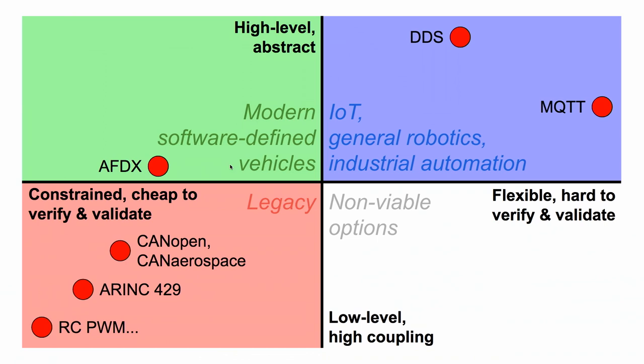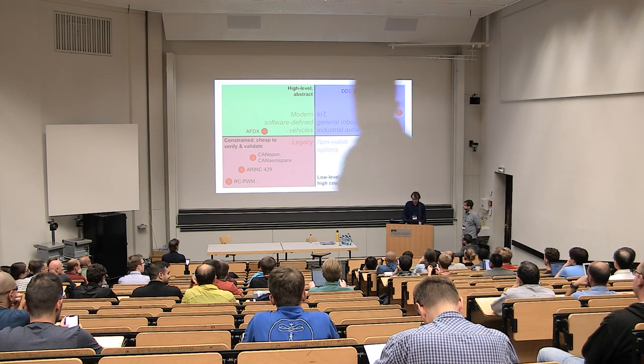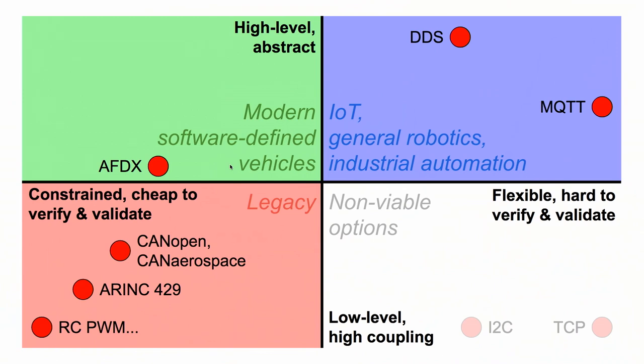Some extra protocols: AFDX is another communication standard used in modern airliners and other safety-critical systems such as fly-by-wire, where safety demands are the highest. It is based on Ethernet, which is technology borrowed from consumer applications. We can also place I2C and TCP on the diagram just for general reference, although they are designed for completely different applications, making them belong in the sector of non-viable solutions.